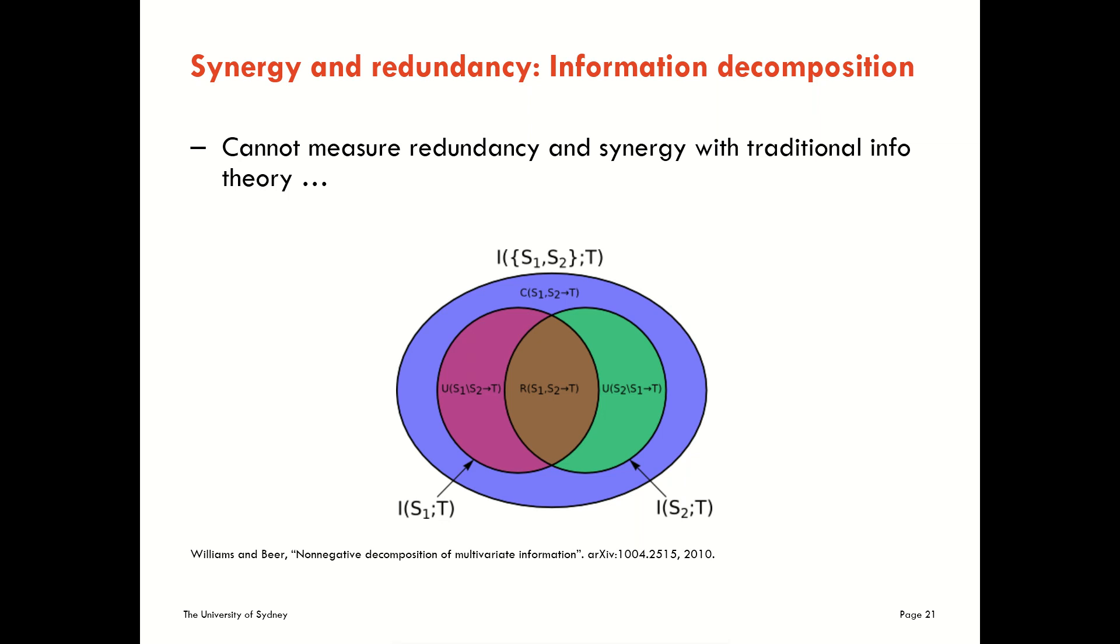We can represent this diagrammatically thanks to Williams and Beer. We could look at the whole information between two sources about a target here, represented in the outer oval in this kind of Venn diagram-like diagram. We call this a partial information diagram. We could then look at within that the information from source one about the target and the information from source two about the target. Now we can imagine that there is something redundant that both source one and source two are telling us about the target. That maybe there's something unique that we can find out from source one only about the target, something unique we can find out from only source two about the target, and then a synergistic piece that we can't find out from either target alone but need to put them together to find out about the target.